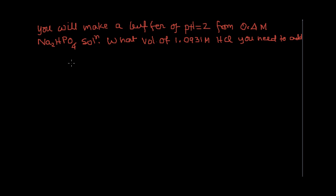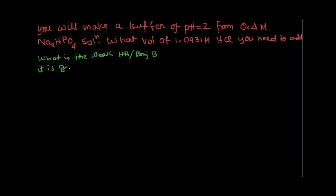As it mentions, you have this disodium hydrogen phosphate. So what will be the acid? There is a question that should come up: what is the weak acid and conjugate base? Because in any buffer, you are going to have either a weak acid and its conjugate base, or a weak base and its conjugate acid.